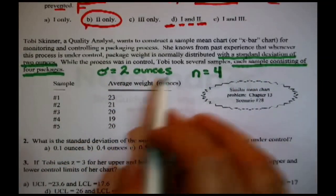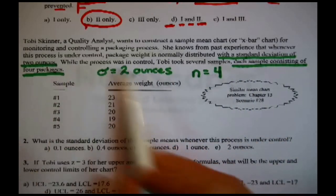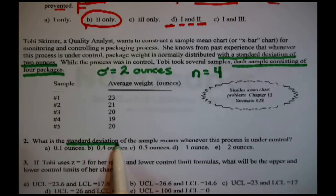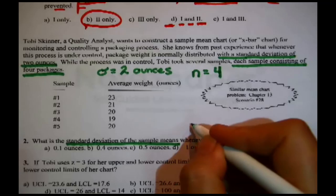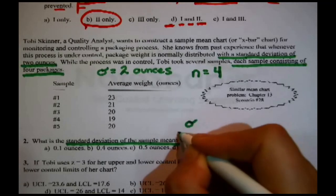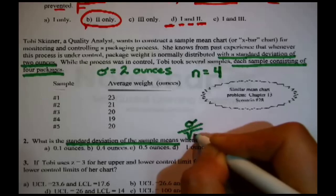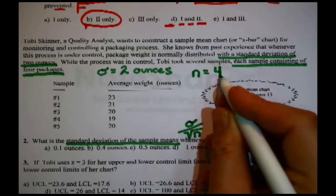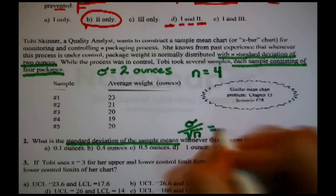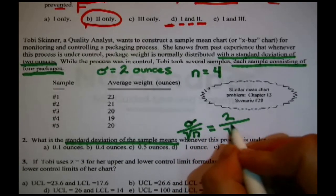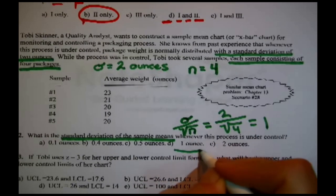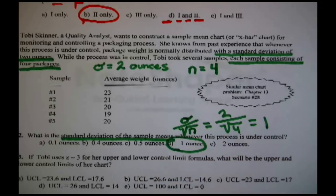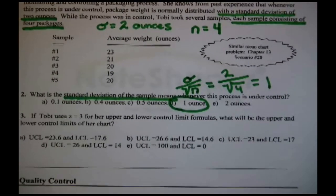What is the standard deviation of the sample means whenever this process is under control? Now, you might be thinking, you went and wrote it, right? You said that she knew the standard deviation and it was two. This is the standard deviation in the process. The standard deviation of the sample means, meaning by how much should these things wobble, these groups of four, is a small adjustment of that. It's the original one cut down a little bit by dividing it by the square root of the sample size. I knew it. I knew we were going to need that number. So that's two divided by the square root of four, or that's two divided by two, which winds up being one. Yep, it's only one ounce.